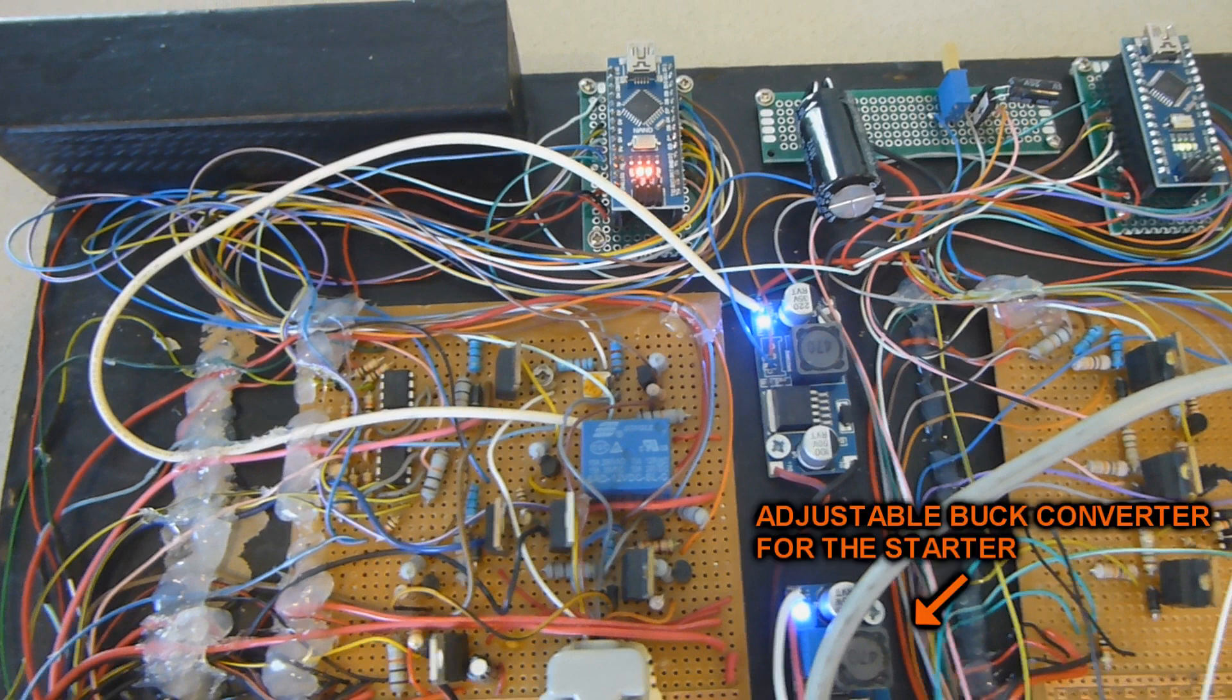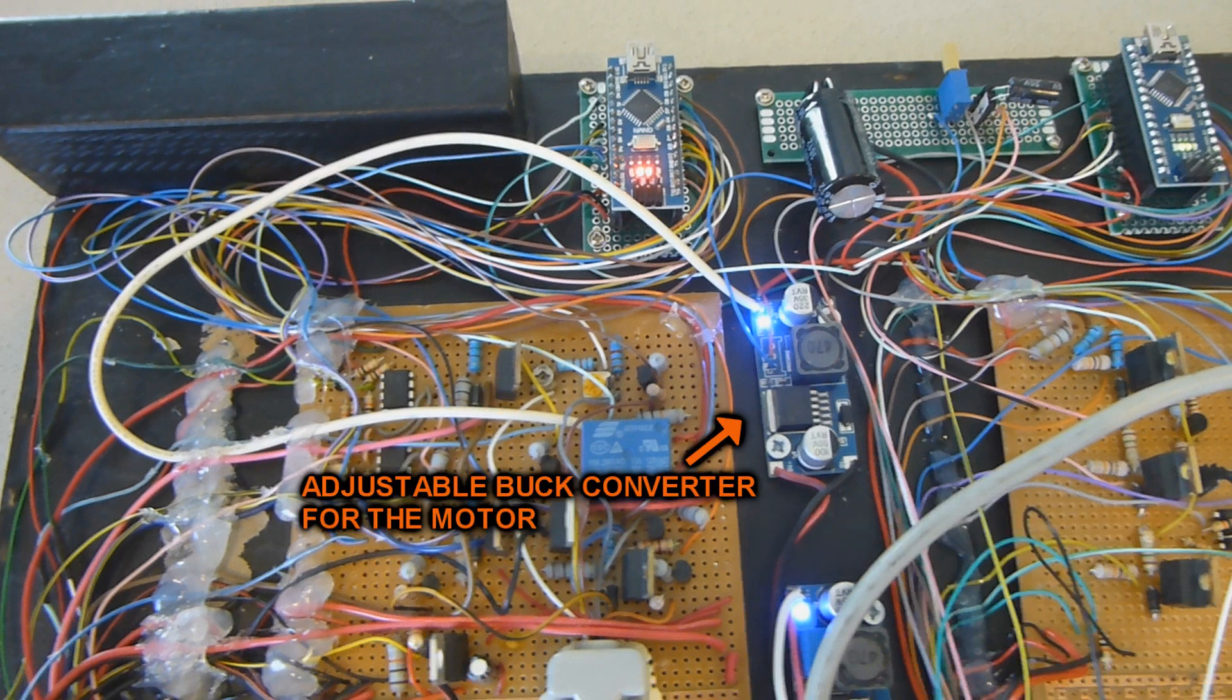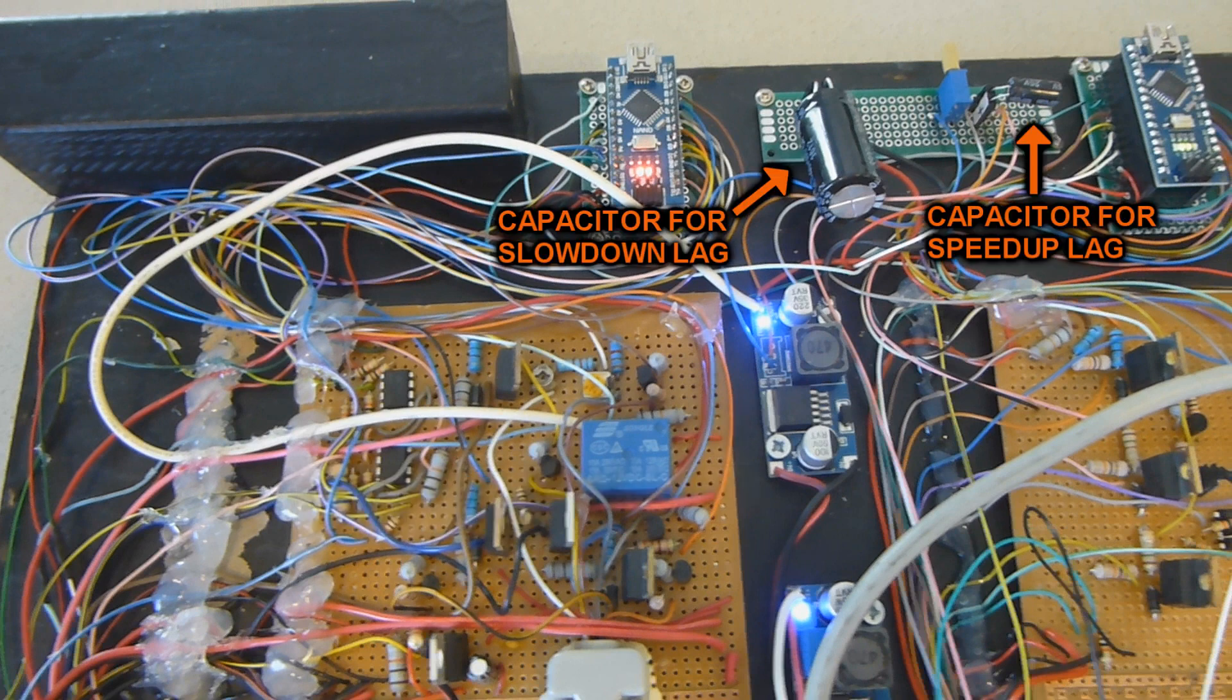I put two adjustable buck converters. One is for the starter solenoid because it requires very specific voltage. The second buck converter outputs the voltage to the main motor, but I'll modify it to sustain the idle speed and to create some lag when accelerating and decelerating, so it reacts more realistically.